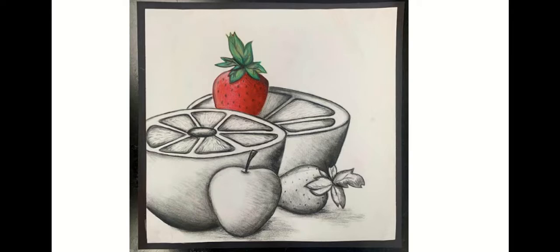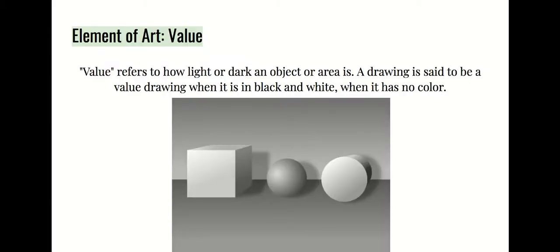What we're going to be doing today is creating our own still life with a few objects that also has value — meaning lights and darks — and a point of emphasis, which we will talk about, plus a little pop of color. The element of art we're focusing on is value, which refers to how light or dark an object or area is. A drawing is said to be a value drawing when it is in black and white.